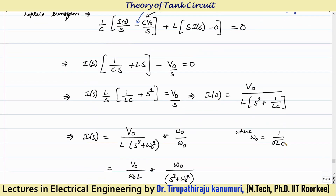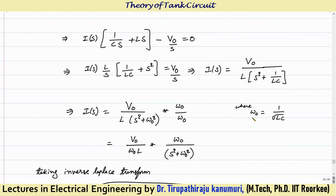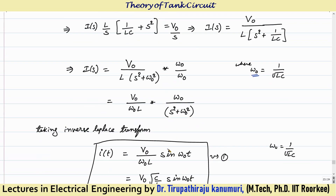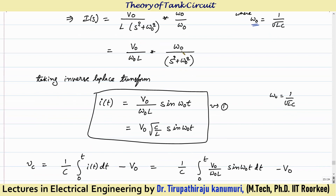Taking 1/LC as ω₀² (where ω₀ = 1/√LC is the natural frequency of oscillations), we get I(S) = (V naught / L) · 1/(S² + ω₀²). Multiplying and dividing by ω₀: I(S) = (V naught / ω₀L) · ω₀/(S² + ω₀²). Taking the inverse Laplace transform, this becomes I(t) = V naught · √(C/L) · sin(ω₀t).